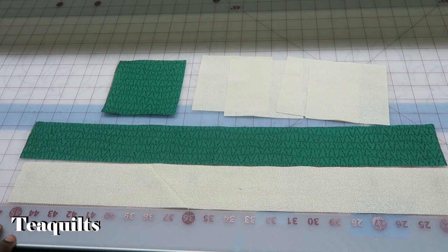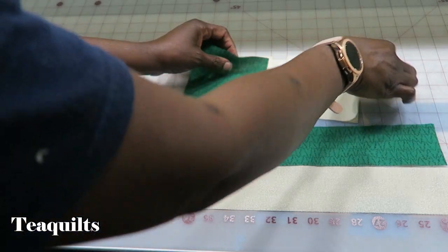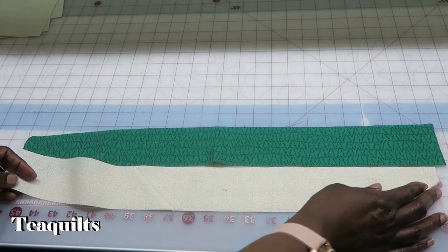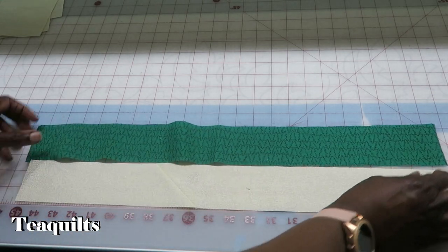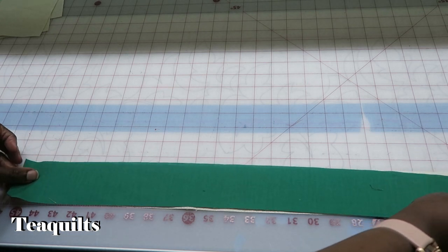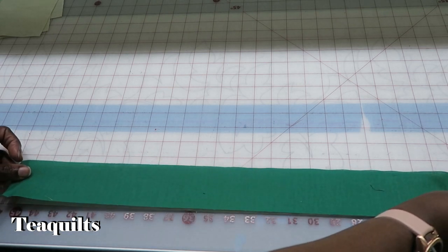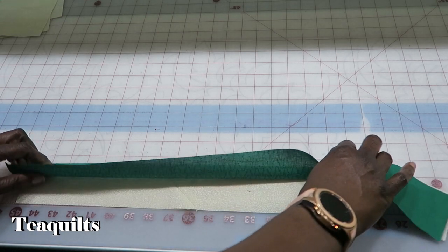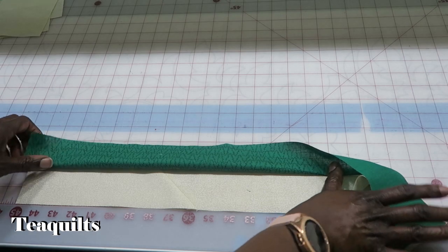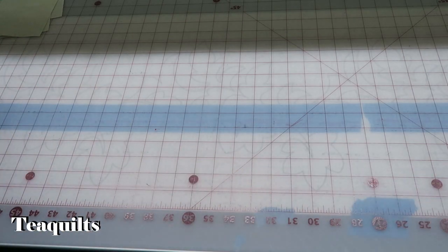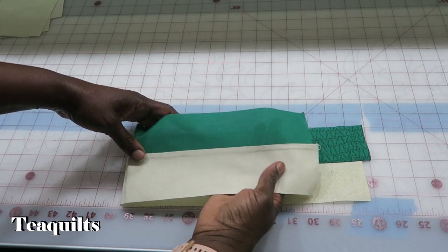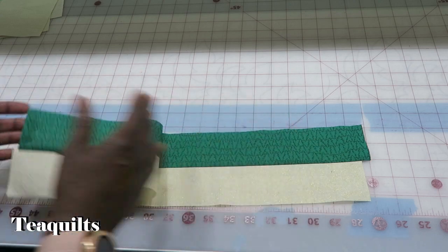This is actually going to be a nine patch block. It's another very simple block. So we'll put the squares aside for right now, and we're actually going to take our two strips and sew them together along the long edge. Once you do that, you want to press your seam allowance toward the green fabric. I have already done that here where I have sewn and pressed my seam toward the green fabric.